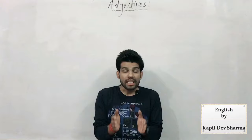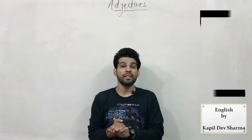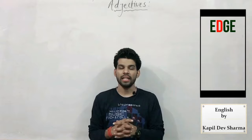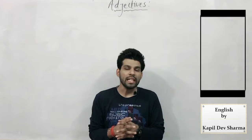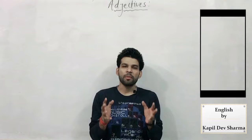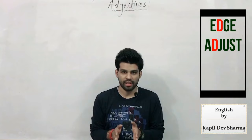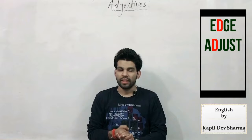Adjective start करने से पहले एक चीज़ कहना चाहूँ कि English के कई शब्दों में D silent जाता है। I repeat, English के कई words में D silent जाता है — जिनमें से कुछ terms होते हैं जैसे 'edge' (E-D-G-E), जिसे हम 'edge' पढ़ते हैं। और daily life में 'adjust' — वहाँ पर D silent जाता है, उसे 'adjust' नहीं कहते, we call that 'adjust'।